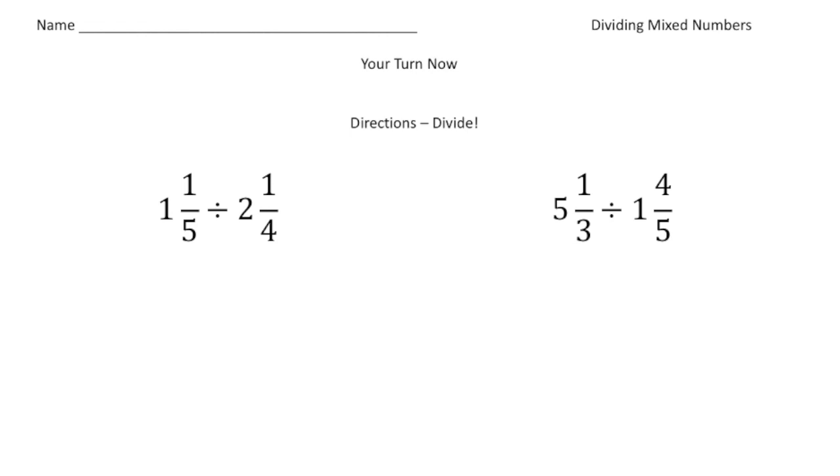Alright, welcome back. Let's say you do these practice problems. So the first one we have is one and one-fifth divided by two and a quarter. Right? So step number one is make them both improper. So one and one-fifth is really six-fifths. And we're going to divide that by two and one-fourth is really going to be nine-fourths.